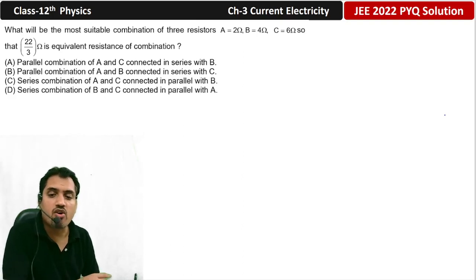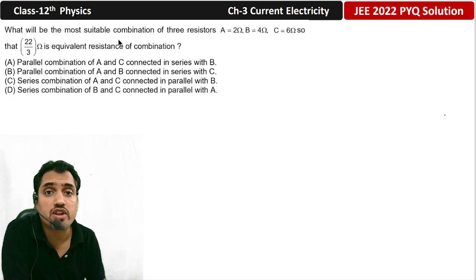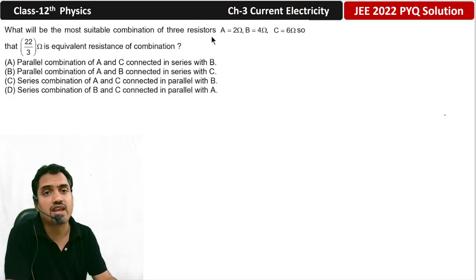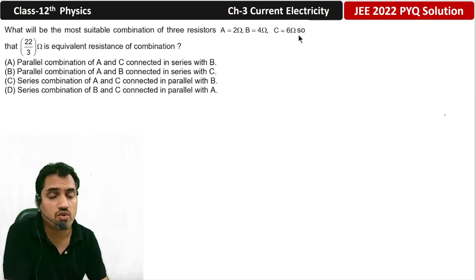Next question, what will be the most suitable combination of three resistors A equal to 2 ohm, B equal to 4 ohm and C equal to 6 ohm?